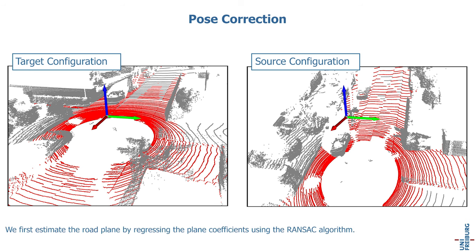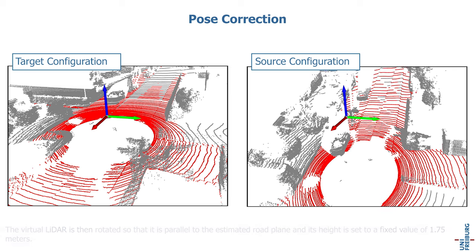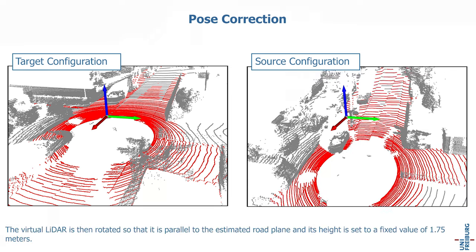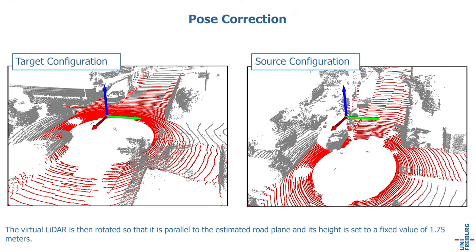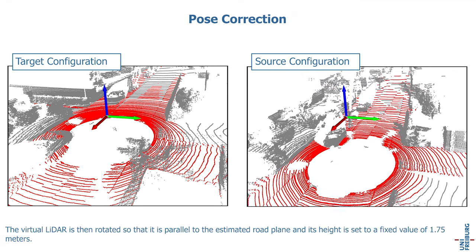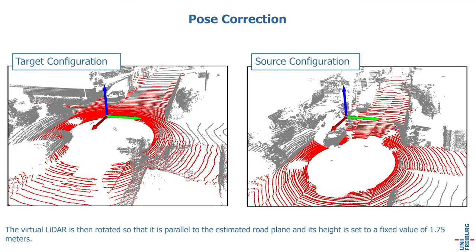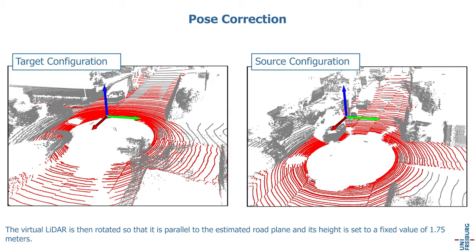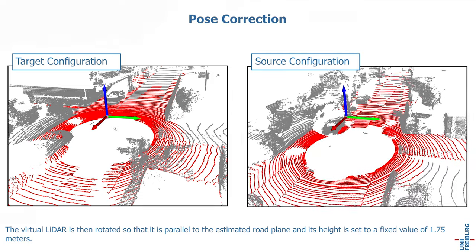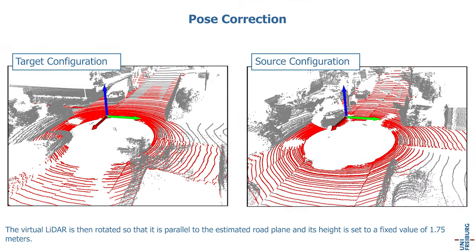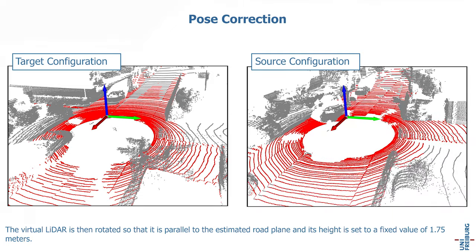We first estimate the road plane by regressing the plane coefficients using the RANSAC algorithm. The virtual LiDAR is then rotated so that it is parallel to the estimated road plane, and its height is set to a fixed value of 1.75 meters.